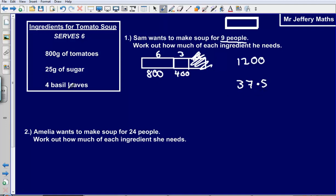And then the last one, how much more do I need? Well, to make it for 6, I'd need 4 leaves. To make it for another 3 after that, I would need another 2 leaves, and so that would give me 6 basil leaves.